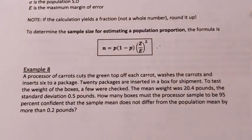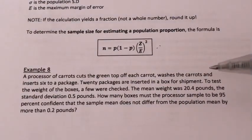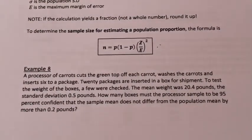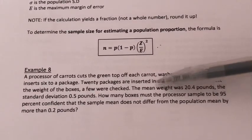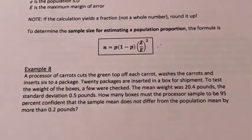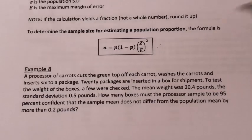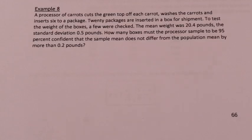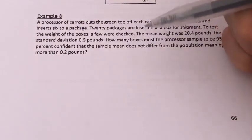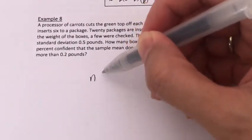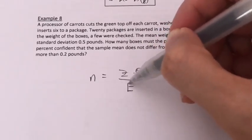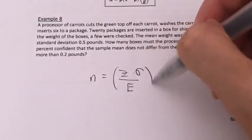First things first, we need to determine: is this question finding sample sizes for estimating the population mean or for estimating the population proportion? Given the information from this question, we know that this is a question of population mean because they gave you the mean weight as well as the standard deviation. Because if it was a proportion question, they would not be giving you these two pieces of information.